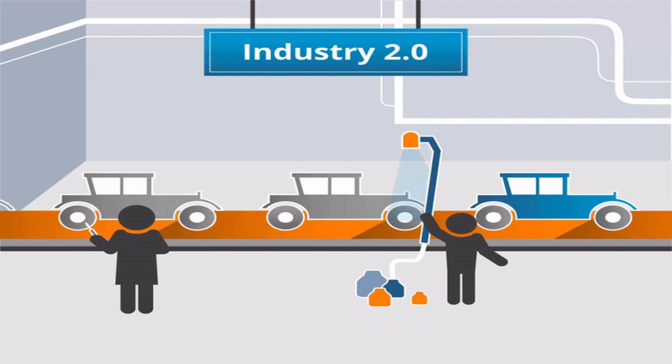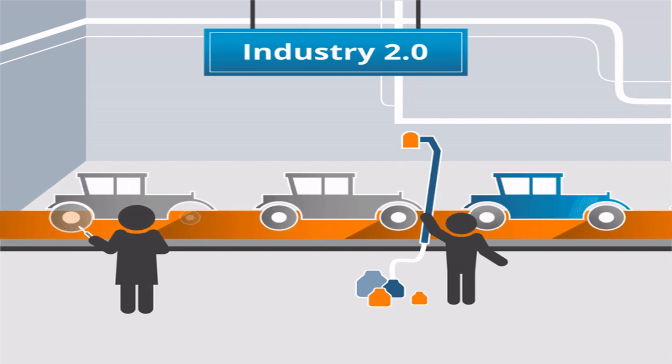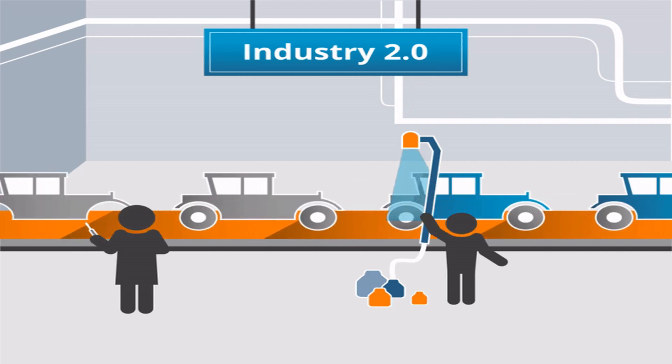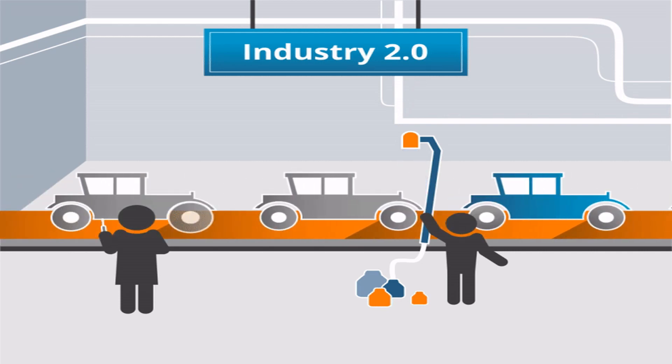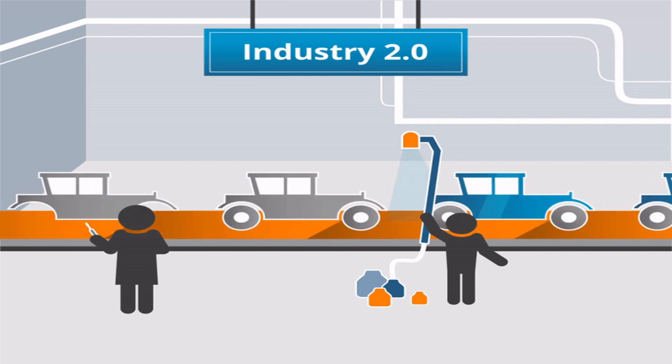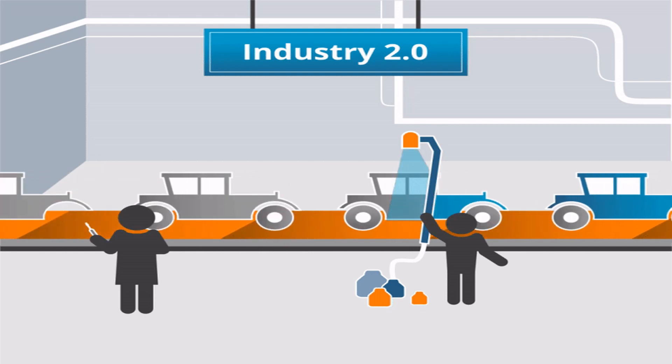Then, around 1870, Industry 2.0 emerged with the first assembly line. Electricity enabled a division of labor and mass production.